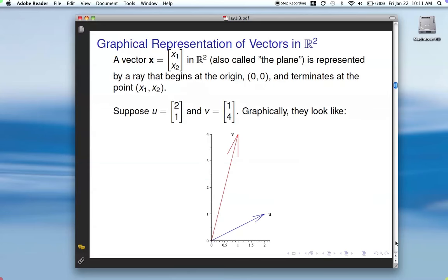So here's a couple of vectors, and you can see how they look on a graph. So u is 2, 1. So we have a ray that begins at 0, 0 and terminates at 2, 1. Similarly for v.